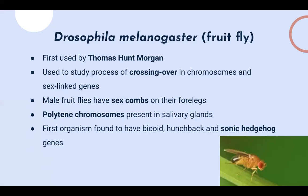The next model organism is the fruit fly, also known as Drosophila melanogaster — typically written in a toss-up answer line as D. melanogaster, with the D underlined. You can just say fruit fly. This organism was a major organism used in genetic studies, first used by Thomas Hunt Morgan, primarily to discover crossing over of chromosomes and how sex-linked genes work, including the famous white eyes versus red eyes studies.